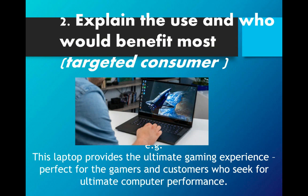After you have mentioned the name and type of the product, the next thing is to explain the use and who would benefit most from the product. You can mention who the targeted consumer or customer is, what the function is, and what the benefit would be. For example, this laptop provides the ultimate gaming experience — perfect for gamers and customers who seek ultimate computer performance. These would be the things you highlight in your product description.